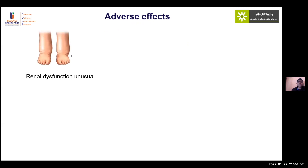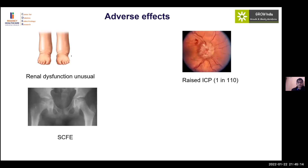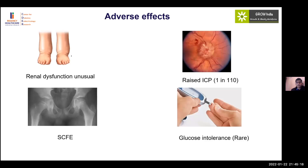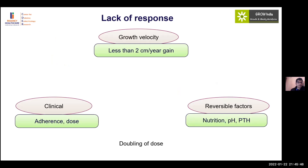Complications of growth hormone therapy in CKD are similar to those in other conditions but may vary in frequency. Raised intracranial pressure, while less common in some settings, can occur in about one in ten CKD patients. Slipped capital femoral epiphysis and glucose intolerance should also be monitored; overt diabetes can occur. Any child with abnormal gait should be evaluated at every visit. Treatment failure is indicated by growth velocity gain of less than two centimeters per year or reversion to pre-treatment growth velocity. Check adherence, dose, and rule out reversible factors.